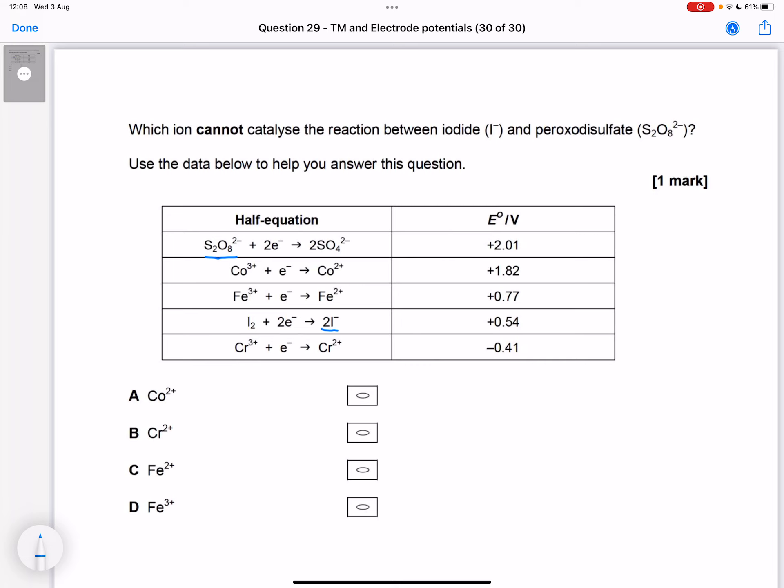So let's just go down the table. If we were to pick cobalt 2+, would that work? We're trying to find one that wouldn't work, but we're going to see whether they would work. So cobalt 2+ could react with S₂O₈²⁻ because it's got a less positive electrode potential than the S₂O₈²⁻.